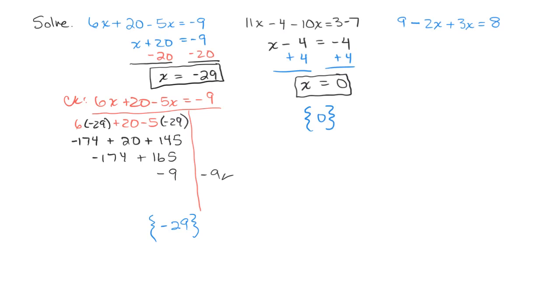All right. We're going to do the last one here. 9 minus 2x plus 3x. So I can combine the negative 2x with the plus 3x, and that will give me 9 plus x equals 8. And now we need to isolate the x. So I'm going to subtract 9 from each side. And that gives our answer of x equals negative 1.